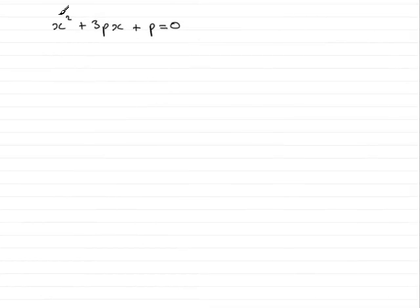Now, in this question, we're given the quadratic x squared plus 3px plus p equals 0. And we've got to find the value of p if this is to have equal roots.